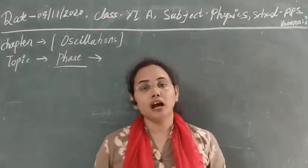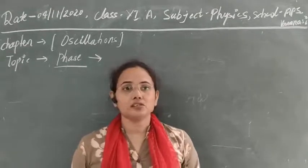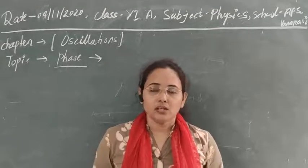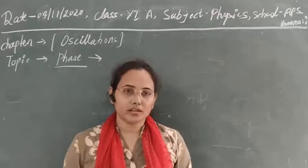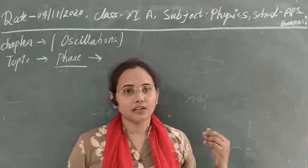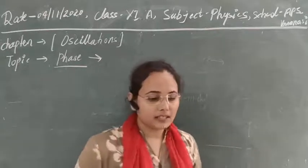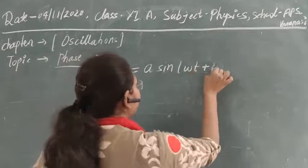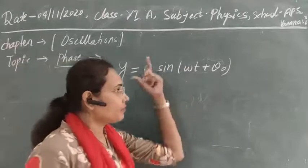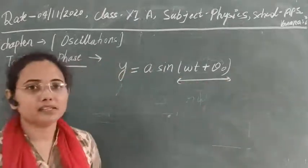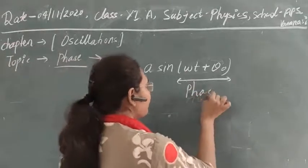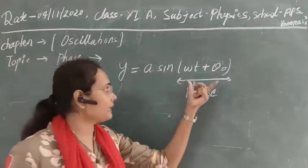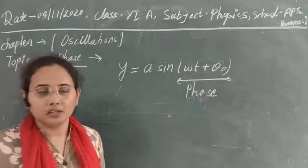In harmonic motions, where sine or cosine functions are used, we can calculate the phase very easily. The phase can be calculated from the argument of the sine or cosine function. If we have an equation such as y = A sin(ωt + θ₀), the argument of the sine function — that is, ωt + θ₀ — is the phase of the system. So in harmonic oscillation, the phase of the motion is simply the argument of the sine, cosine, or other trigonometric function being used.